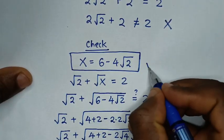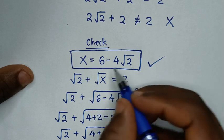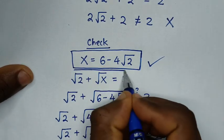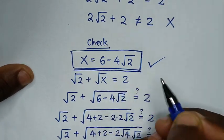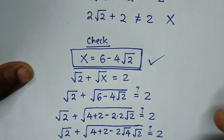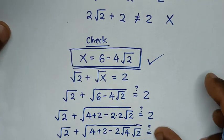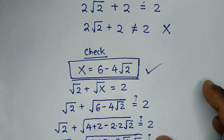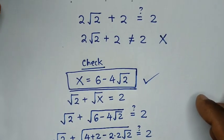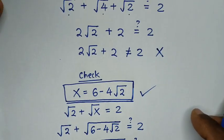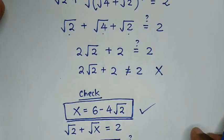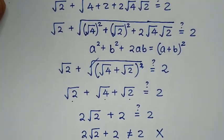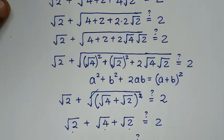So we have only one solution for the value of x in this problem: x = 6 − 4√2. Thank you. Don't forget to subscribe to my channel, and see you in the next video. Bye-bye.